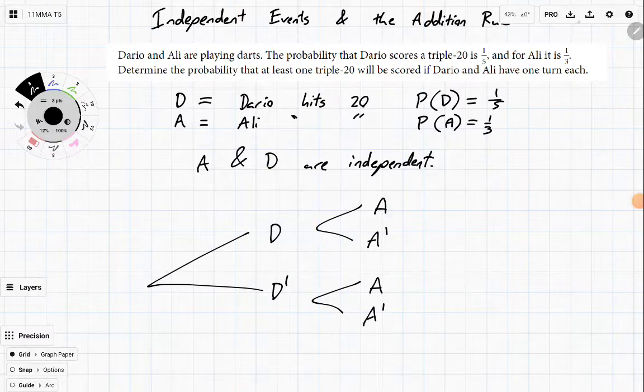Now, since they're independent, it also means their inverses are independent. We can quickly work out all of these. We've got a fifth, which means there's a four-fifths chance that he misses, and for Ali it's a third, which means there's a two-thirds chance that he misses.